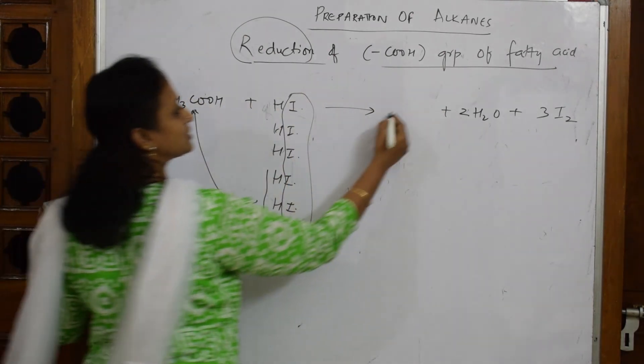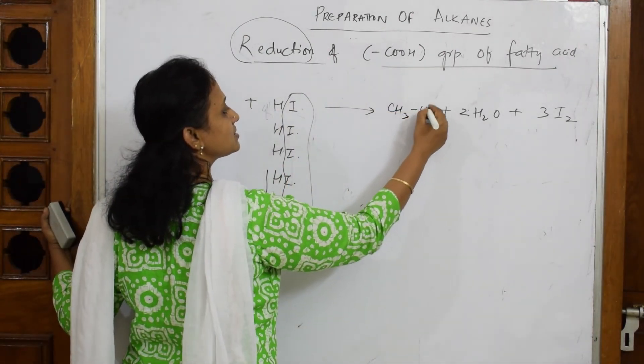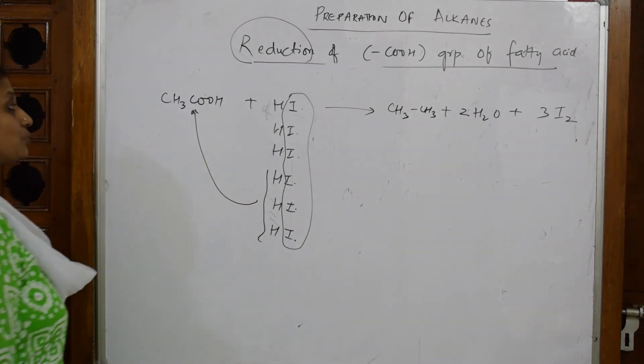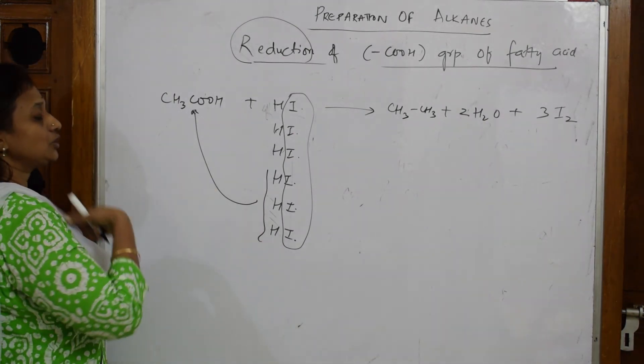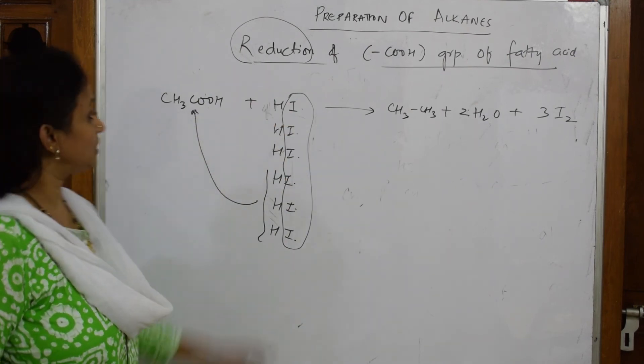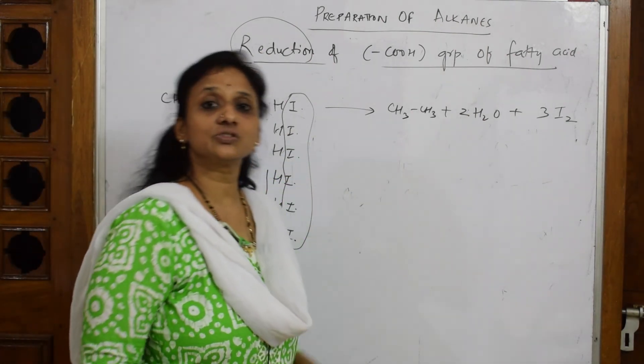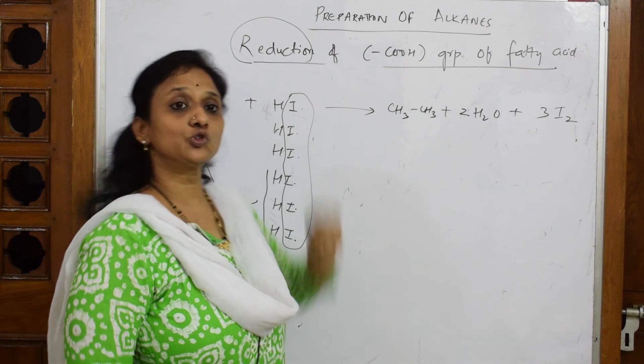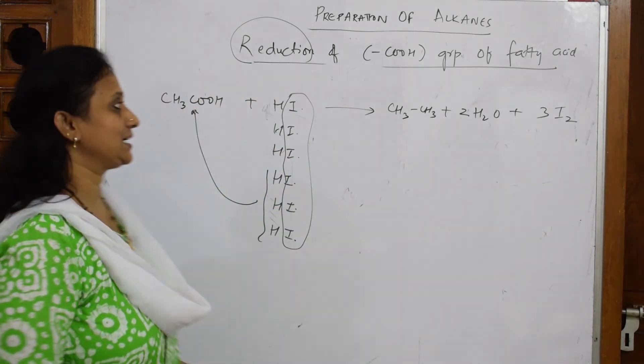Now what is left? Left as CH3-CH3, that's it. Simple. Now what is important here? From acid you are going to get an alkane. We are going to reduce this. I'm removing hydrogen, so reduction or removal or reduction of the COOH group of the fatty acid to form alkanes.